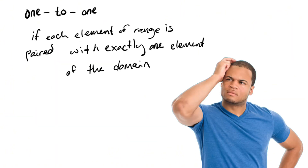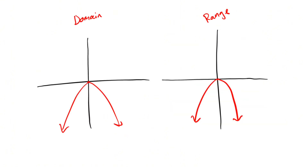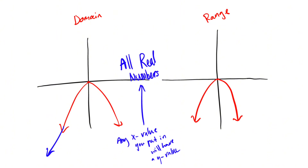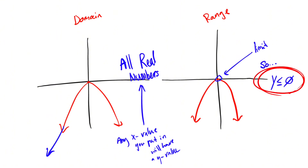A one-to-one function occurs if each element of the range is paired with exactly one element of the domain. Notice how this will keep going on across the x-axis? This visualizes that any real number x input will have a y output. Therefore, the domain is all real numbers. Do you see this point here? It is the highest point of the range, or the limit. So y is less than or equal to zero. Writing it like this is called algebraic notation.